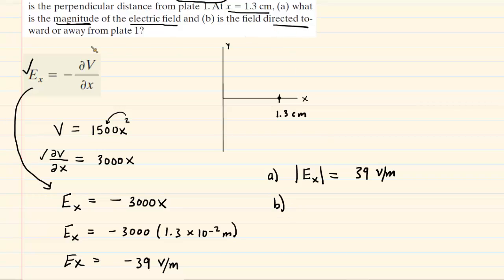And it says directed towards or away from plate 1. You'll notice that the electric field had a negative sign in front of it. So if we were to draw the electric field at this location, because of that negative sign, it would be directed along the negative x-axis. So it would basically point this way.